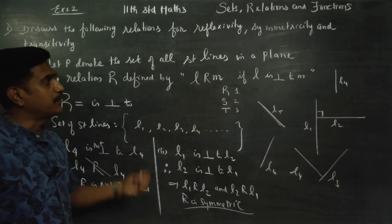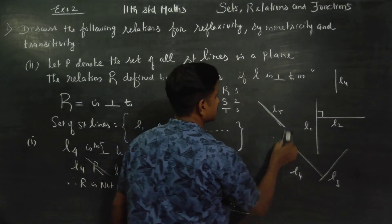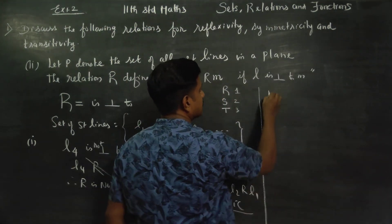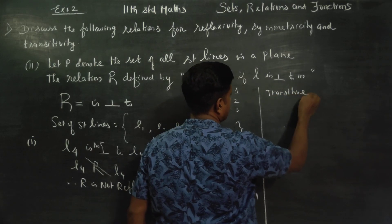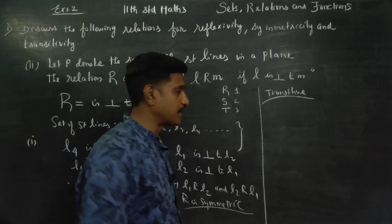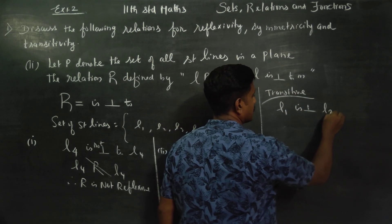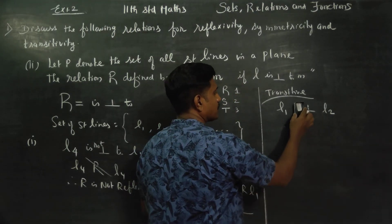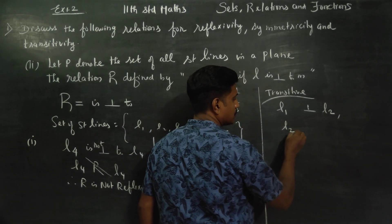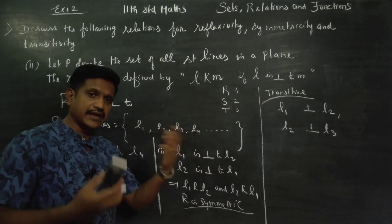The last one is transitive. For transitivity, we check three lines. Let's choose: L1 is perpendicular to L2, and L2 is perpendicular to L3. Now check if L1 must be perpendicular to L3.